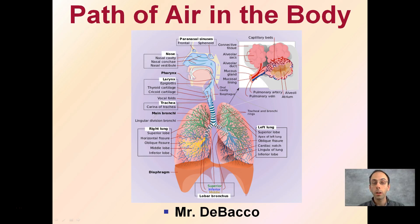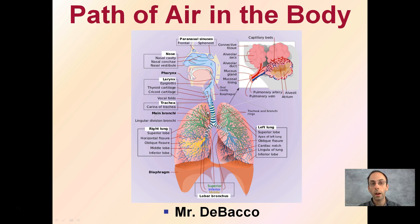Here we're looking at the path of air in the body. This shows a nice overview of the nose, the larynx, the trachea, the right lung and left lung. We're going to look at this in a little bit more detail and be able to identify some of these portions on how air moves through our body.